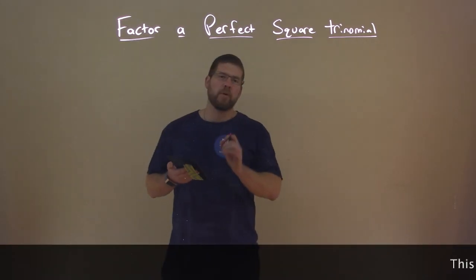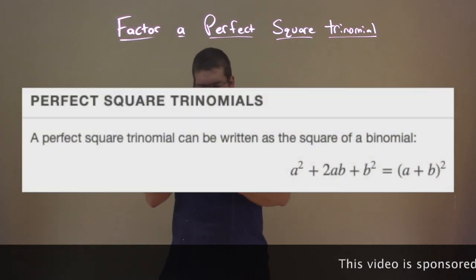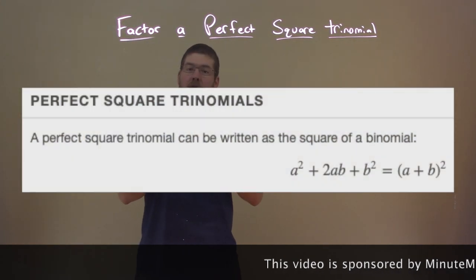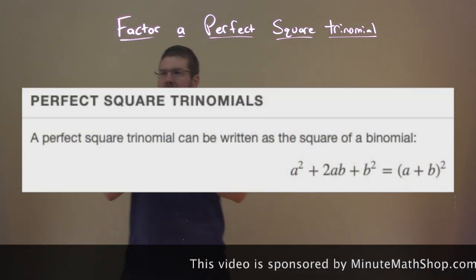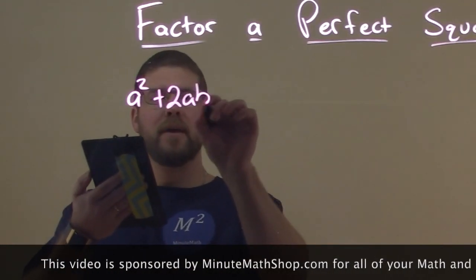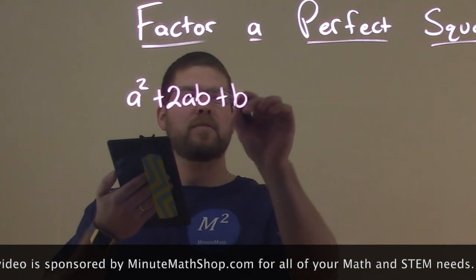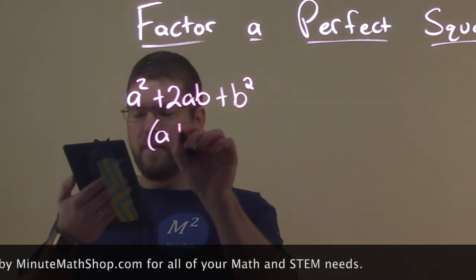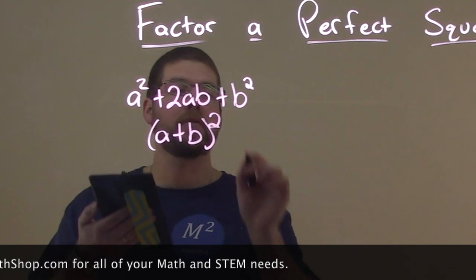So what is a perfect square trinomial? A perfect square trinomial can be written as the square of a binomial. For example, if we're given a squared plus 2ab plus b squared, it can be written as a plus b all squared.